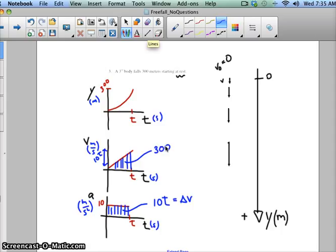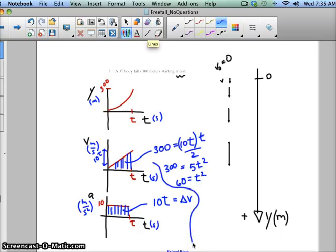So 300 has to equal 10T times T divided by 2. So that would mean that 5T squared has to be 300. If I divide both sides by 5, I think I get 60 has to equal T squared. So that means T is gonna be the square root of 60.